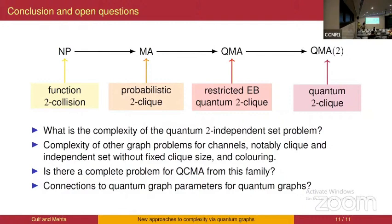In this quantum two-clique problem, is the quantum channel given as a black box oracle? We were considering giving it as a circuit, but in the actual proof the circuit is just used as a black box — we don't look inside. So the hardness could come from a random oracle or similar circuit model. If you give it as a black box, could this be useful for oracle separations, like separating QMA2 from QMA? I hadn't thought about that, but maybe there's a way to spin this as an attempt at an oracle separation.